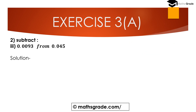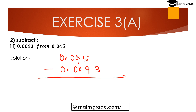Now question number 3, third bit: subtract 0.0093 from 0.045. We write 0.045 minus 0.0093. In 0.0093 there are 4 digits after the decimal point, but in 0.045 there are only 3 digits after the decimal point, so we add one more zero to make it 0.0450.